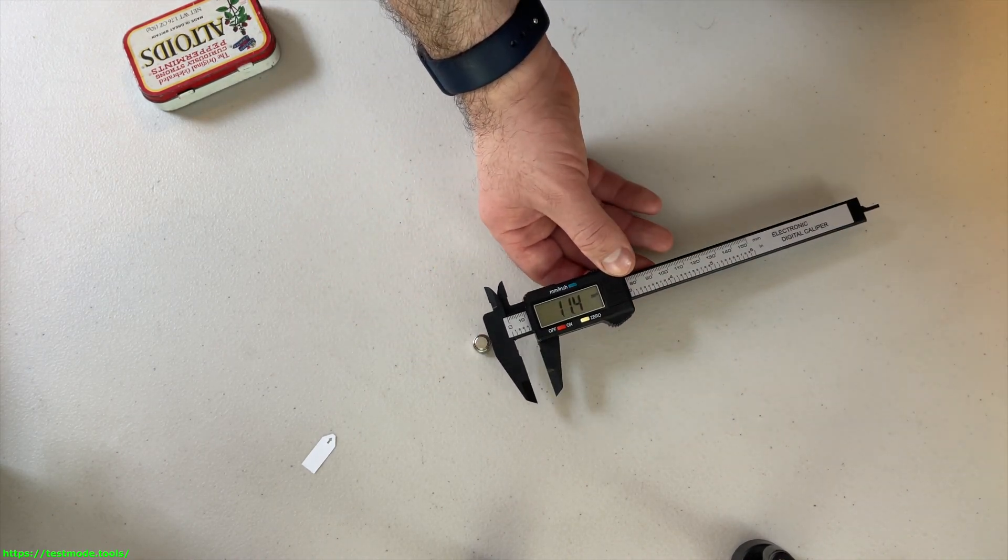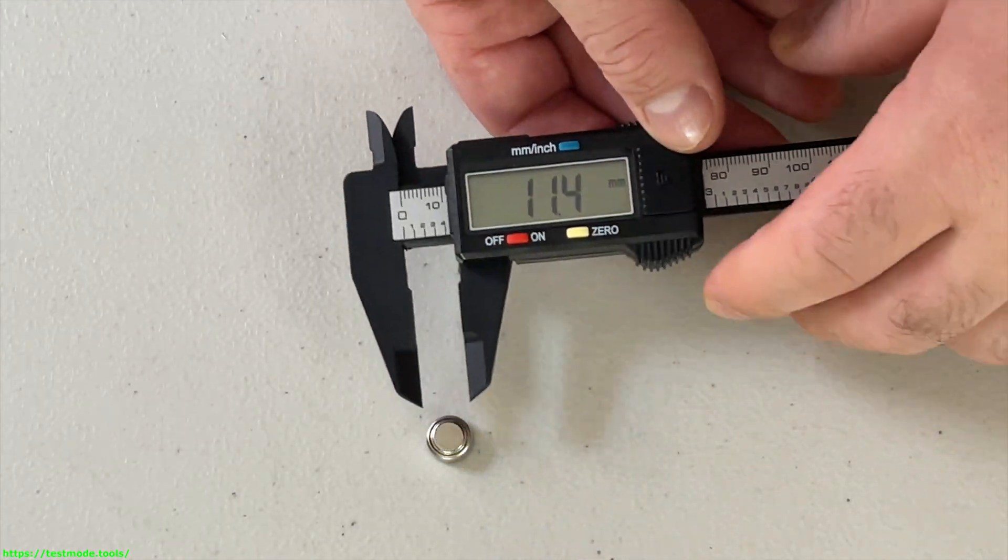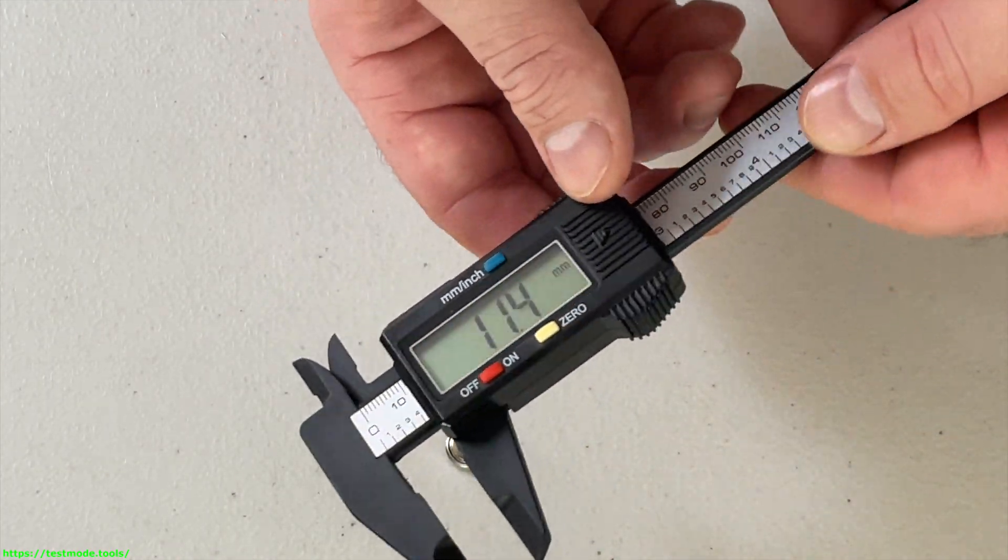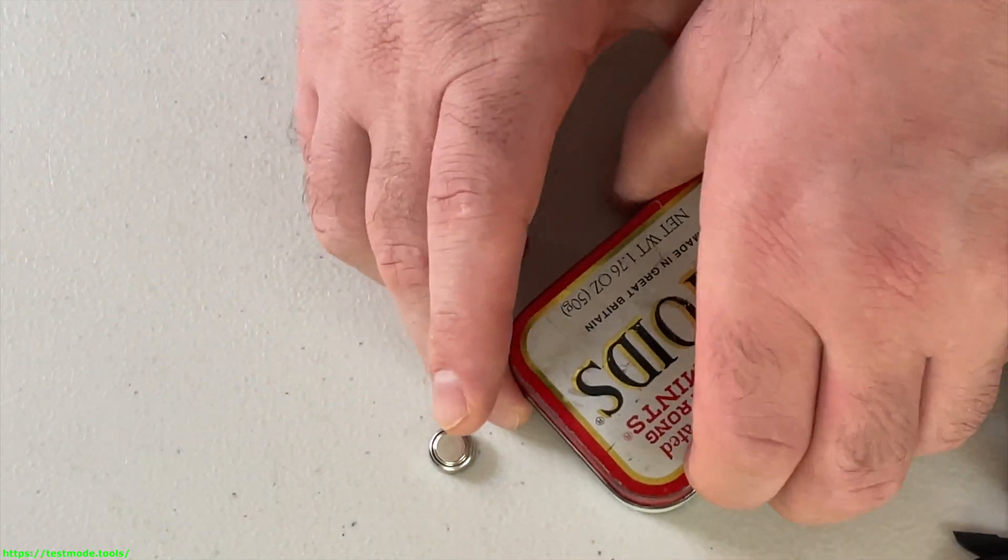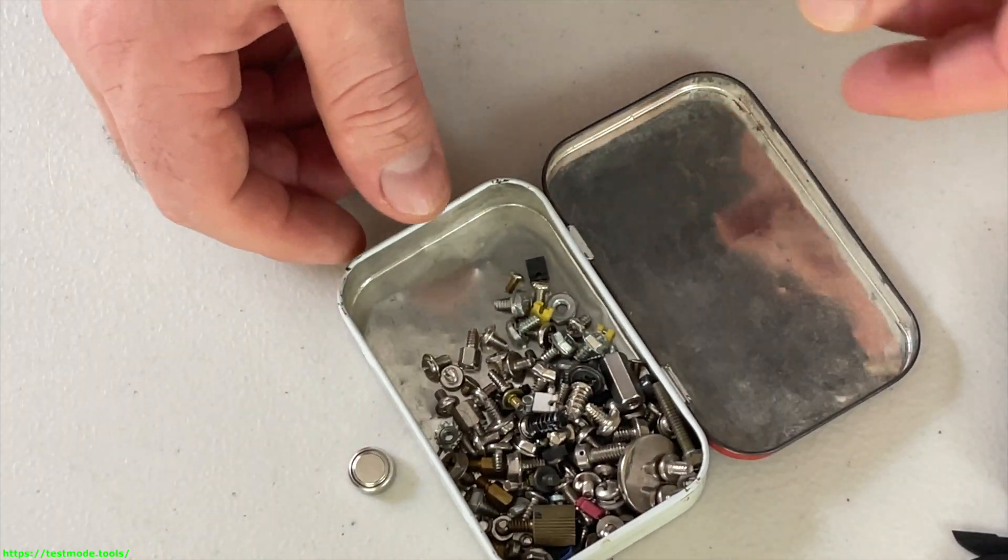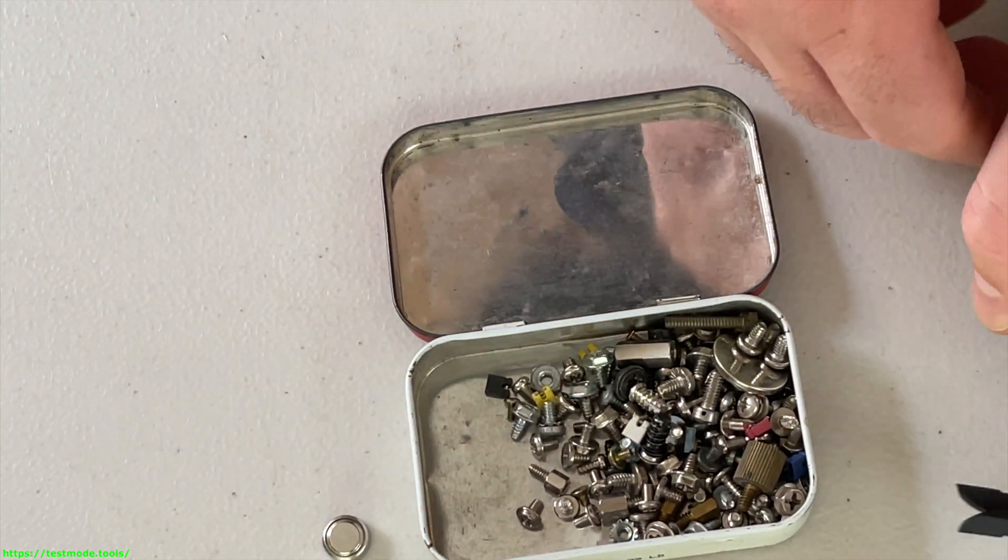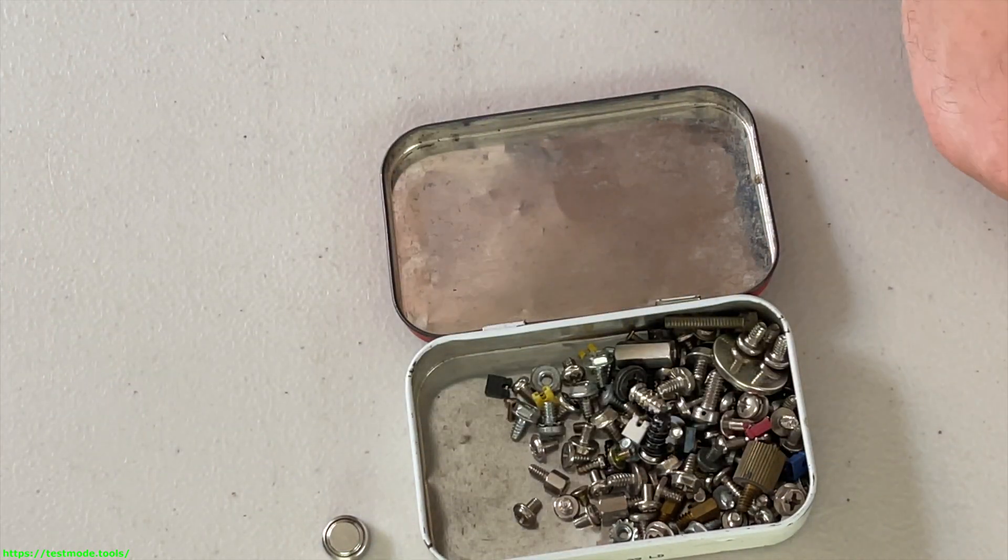I should probably zoom this in just a little bit, there we go. What else do we want to show you? I'm going to use this old Altoids tin. It actually has a bunch of old screws and things inside it. I'm going to show you how you can measure this. I'm going to dump these out.